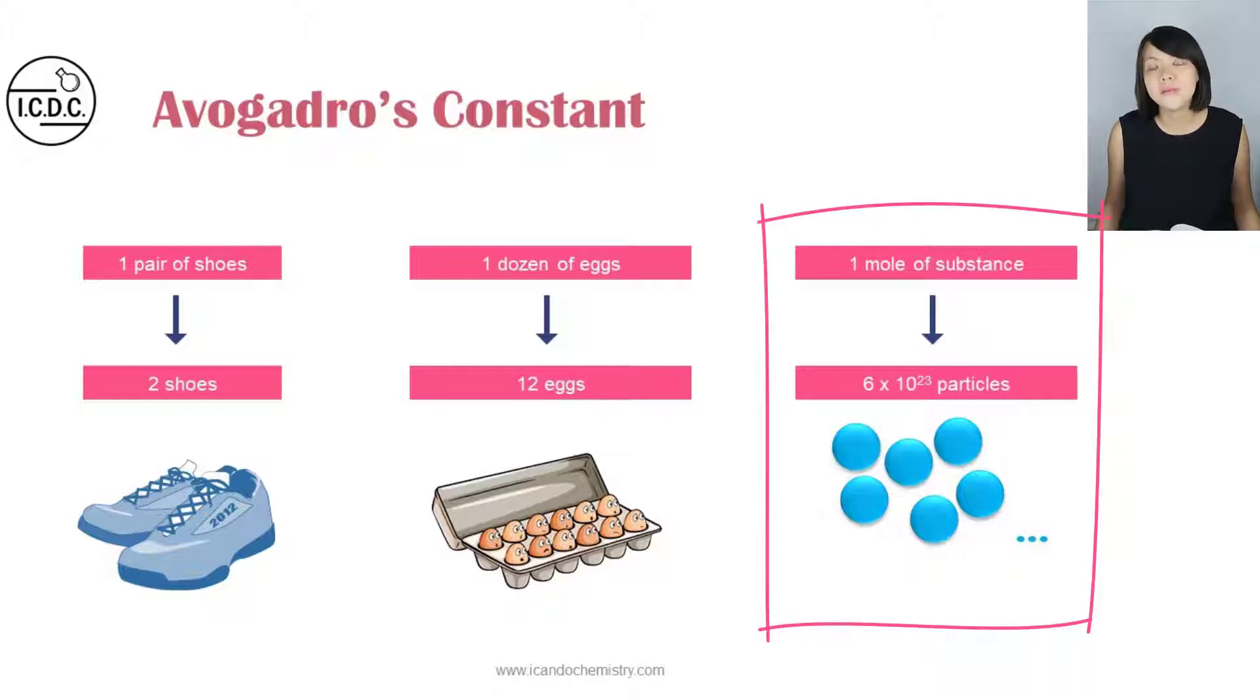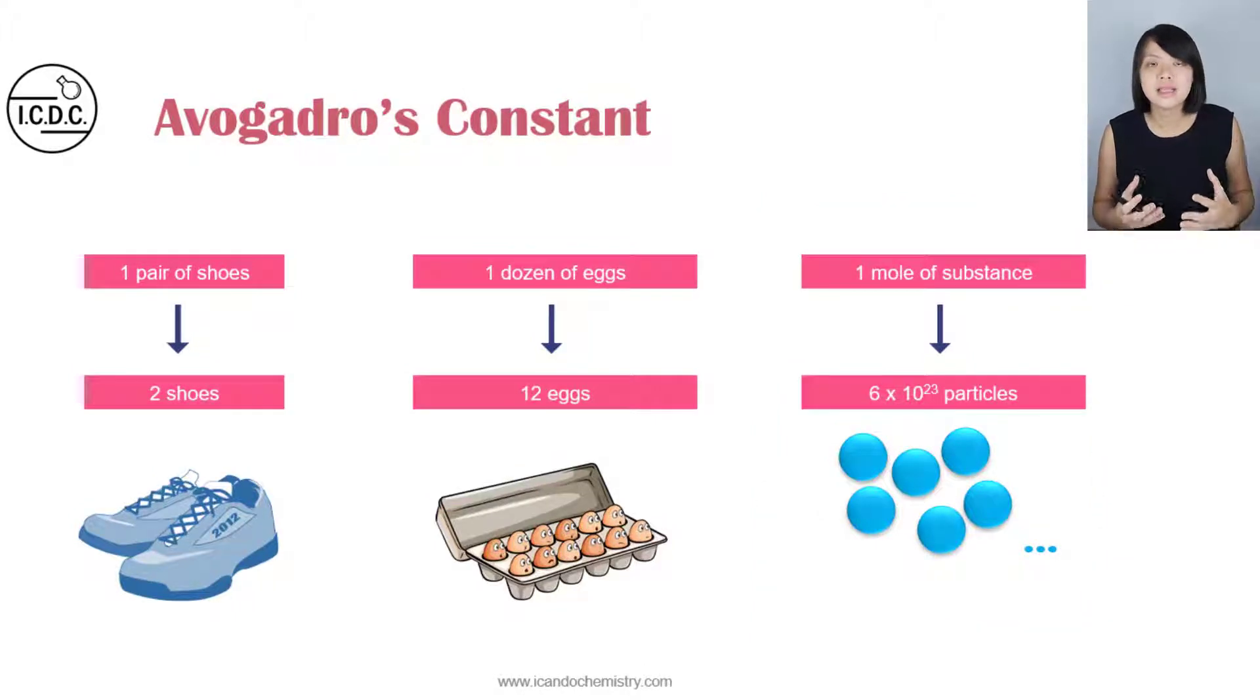So one mole of a substance simply means that there are 6 times 10 power 23 of these particles. Now what exactly is 6 times 10 power 23? It's just a very huge number and it doesn't make sense for us to list out all the zeros. So we decide to write this number down in standard form.